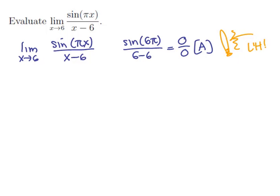L'Hopital's rule says that we're going to take the same limit, the limit as x tends to 6, but replace the numerator by the derivative of the numerator. So cosine of pi x times the derivative of pi x, or pi.